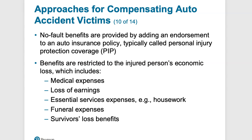The following benefits are typically provided under no-fault PIP: medical expenses paid up to some maximum amount; payments for loss of earnings if you can't go to work for a period of time; essential services expenses — for example, if you're a homemaker and the family has to hire a maid or cook; funeral expenses if you die; and survivors' lost benefits for surviving family members.